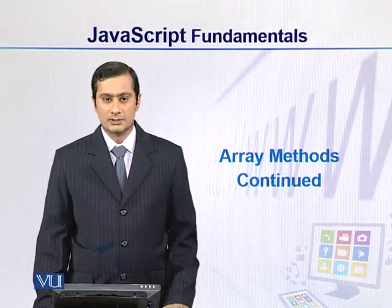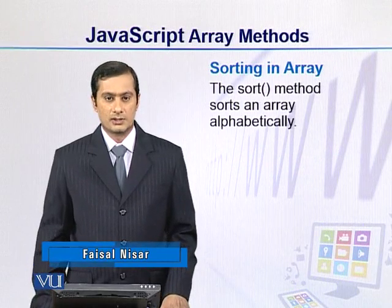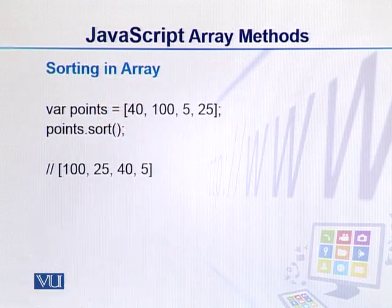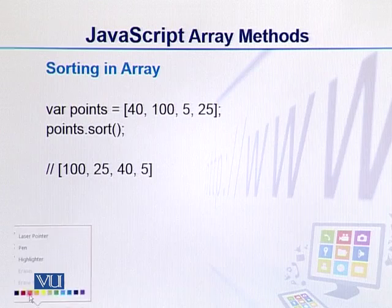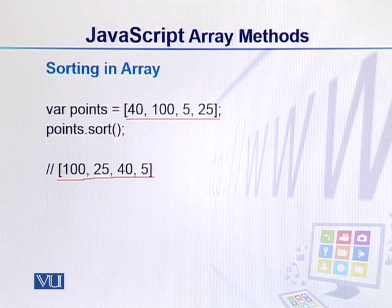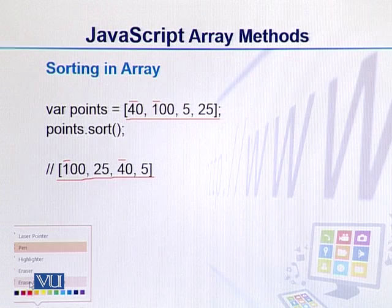Let's proceed further with array methods. We all know that we can sort any values in an array using the sort function. But there is a problem - if we have an array with numeric values and we apply sort on it, we get a strange result. This is because everything is sorted using string comparison in alphabetical order. So 4 comes before 1 alphabetically, which is why 1 will come before 4. This is a strange but common problem that we can solve easily.